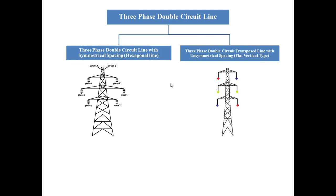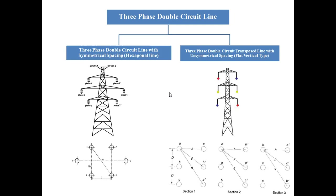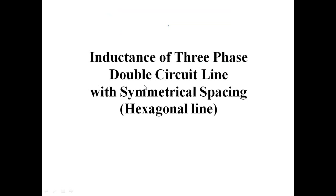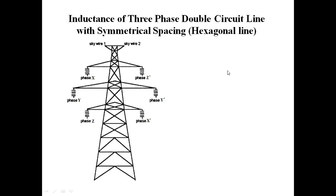For the hexagonal line, the conductors form a hexagonal shape. For the flat vertical type, all conductors a, b, c and a', b', c' are placed vertically. Now I am going to discuss the inductance of the three-phase double circuit line with symmetrical spacing — the hexagonal type.